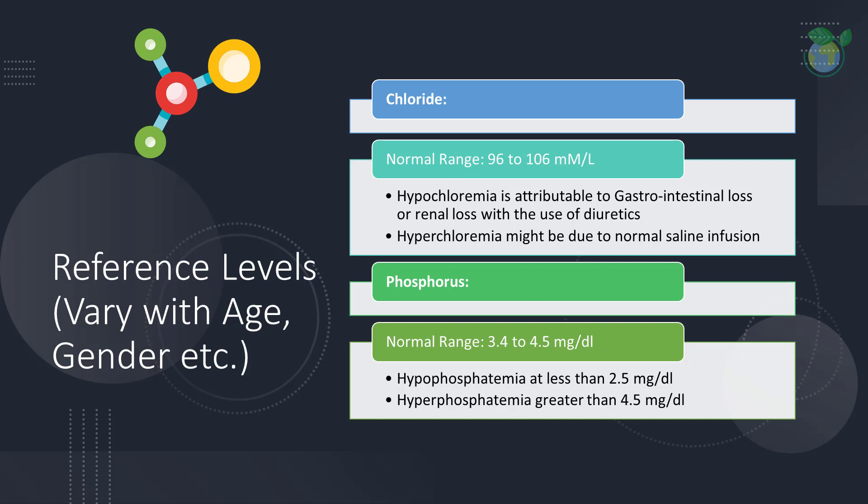For the phosphorus electrolyte, the serum level is in the range of 3.4 to 4.5 mg/dL. The scenario of hypophosphatemia occurs when levels fall below 2.5 mg/dL, and could be attributable to refeeding syndrome, vitamin D deficiency, or hyperparathyroidism. On the other hand, hyperphosphatemia could arise due to hypoparathyroidism or chronic kidney disease.